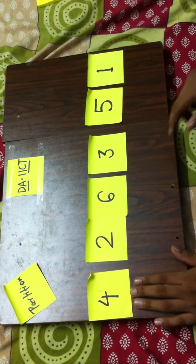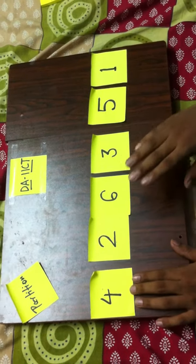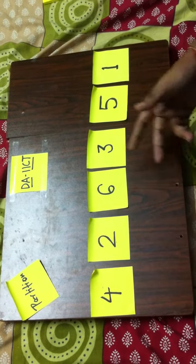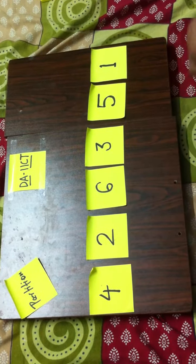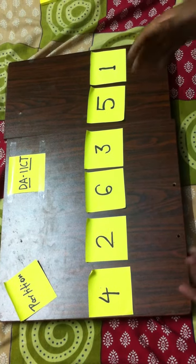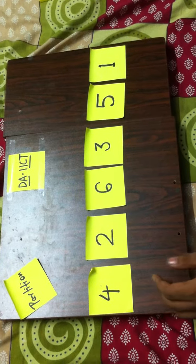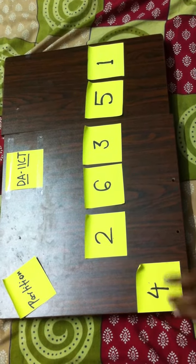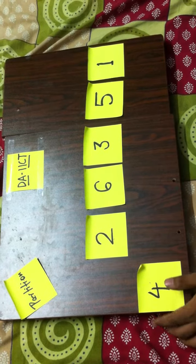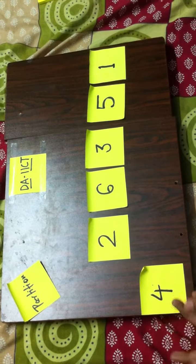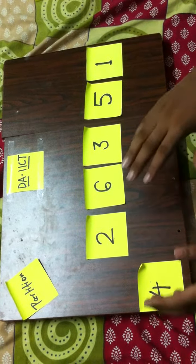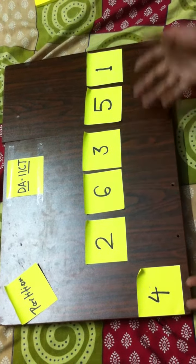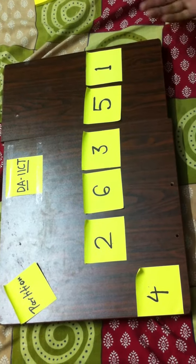Partition — this is the first way to do partition, and the second way will come in the next video. In this way, we simply consider the first element as pivot. There is a conventional way where the first element is considered as pivot, but you can consider any other element also.